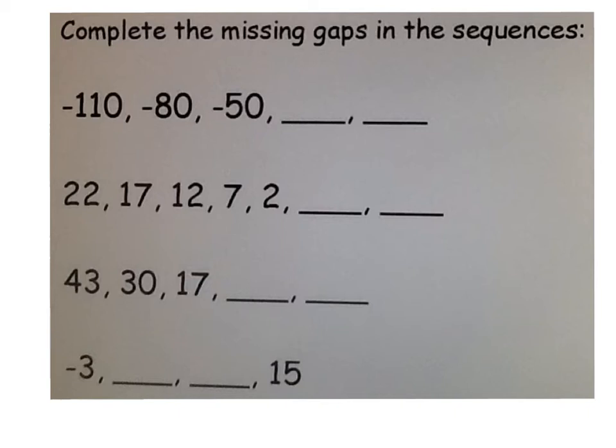Okay, so let's have a look. So for the first example, I can see that the numbers are increasing by 30. We're getting closer to zero each time. So I get to -50, and I add 30, and that will get me to -20. And then I need to add another 30, so I'll need to add 20 to get to zero, and then another 10, so I've added 30 in total. So that will get me to 10.